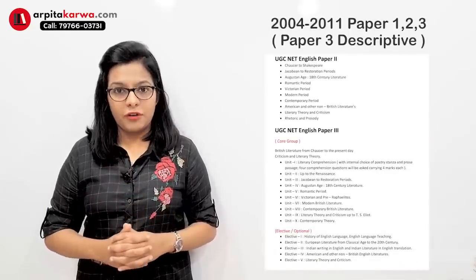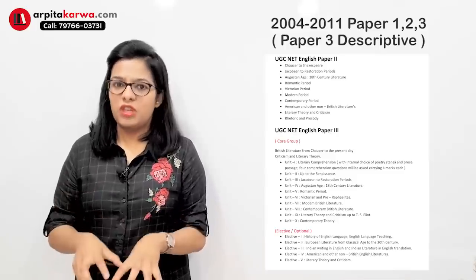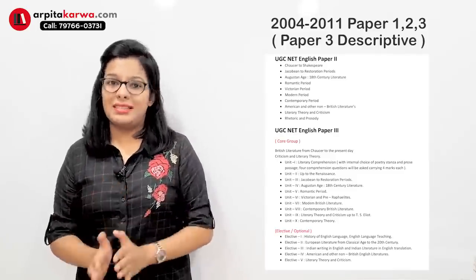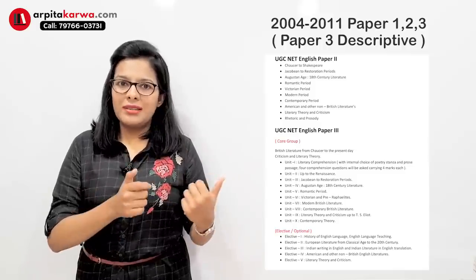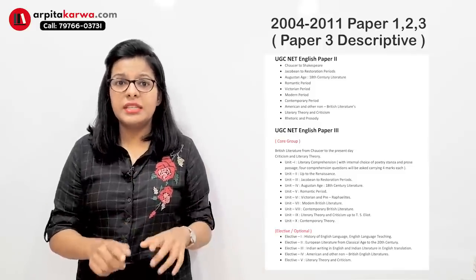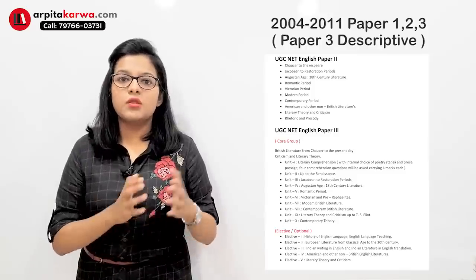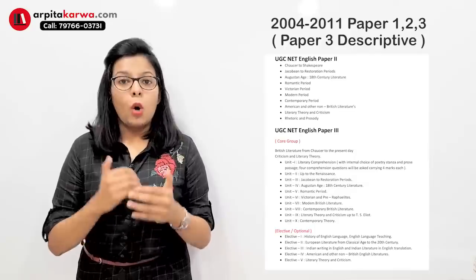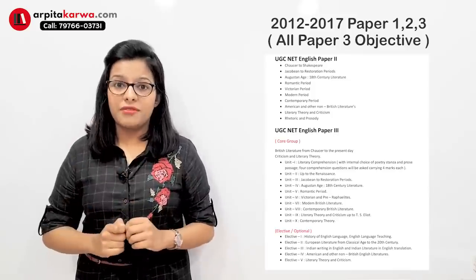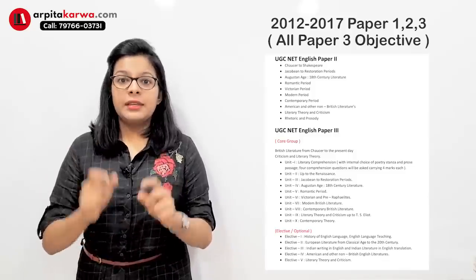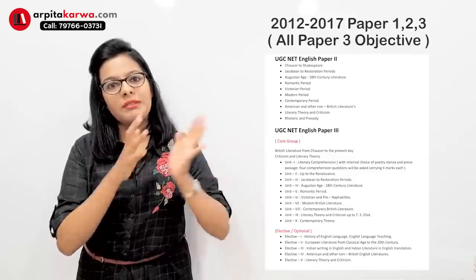Since inception till 2011 UGC conducted a NET exam in three papers. Paper one was general; paper two and three were subject papers, in which paper two was objective and paper three was descriptive. The syllabus they designed was according to this pattern — the old subject syllabus had two divisions: paper two topics and paper three topics, which were descriptive because essay-type answers were written at that time. Then in 2011 there was a major change: they made paper three objective. Three papers were conducted from 2012 till 2017, all objective, but they clearly mentioned that the syllabus remains the same.